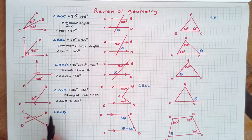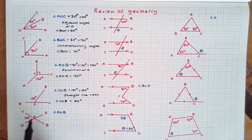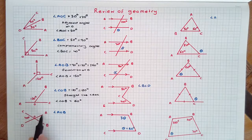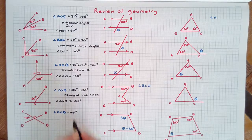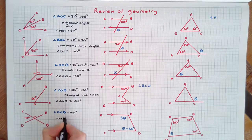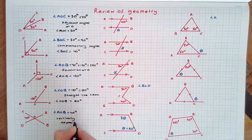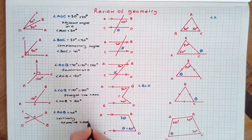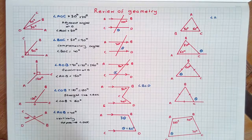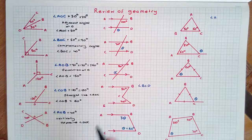Vertically opposite angles about a vertex are equal. Angle AOB is therefore 40 degrees because it's vertically opposite angle DOC. We can also use Greek letters such as alpha, beta, gamma and theta to represent angles in geometry.